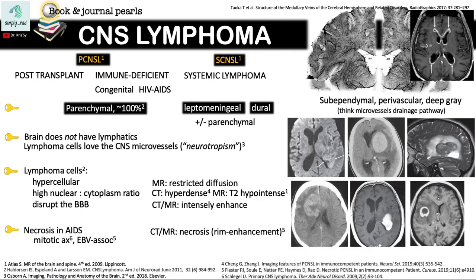CNS Lymphoma can be primary or secondary. Primary means you have no evidence of systemic lymphoma to explain the brain factors. Primary CNS Lymphoma occurs in three subsets of patients: post-transplant patients or those with immune deficiency. Immune deficiency can either be congenital or acquired, such as in HIV-AIDS.